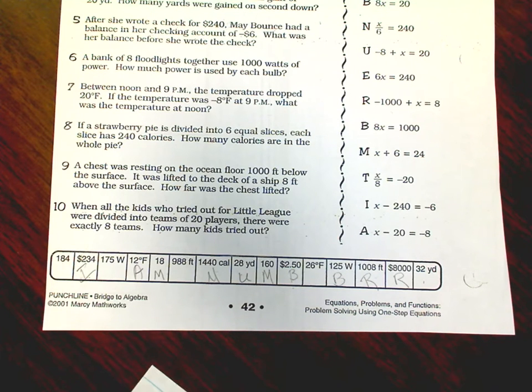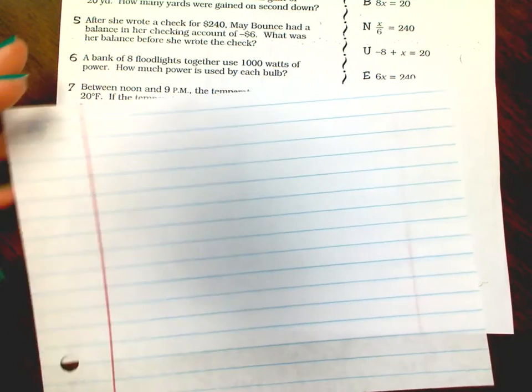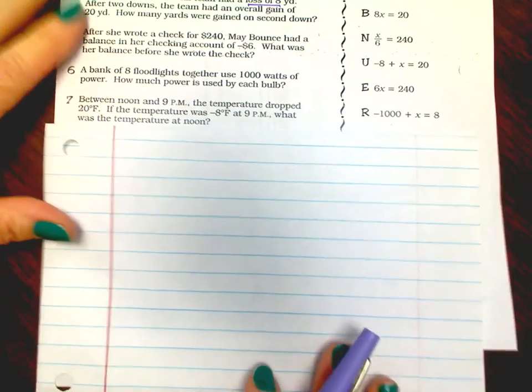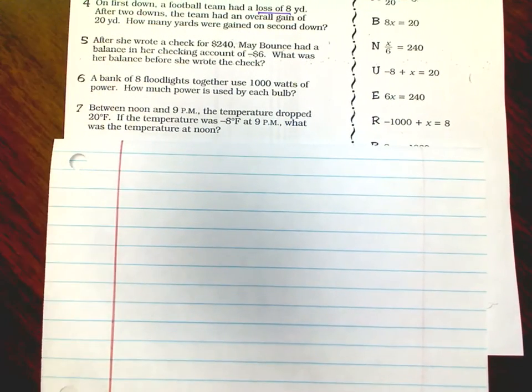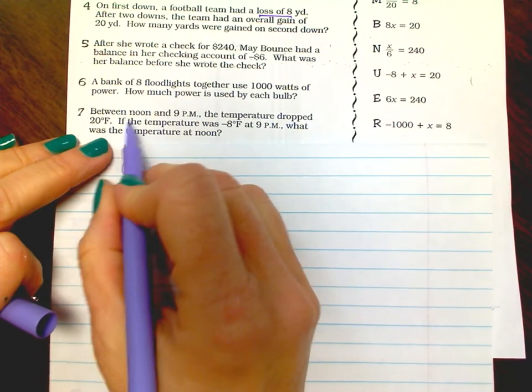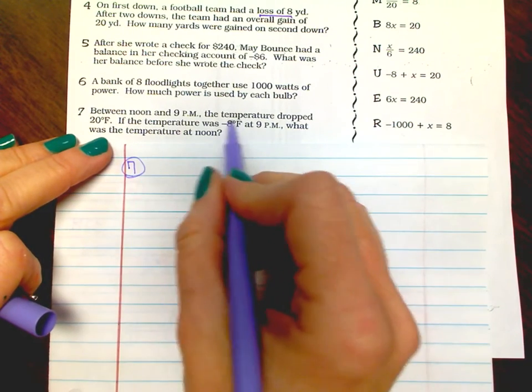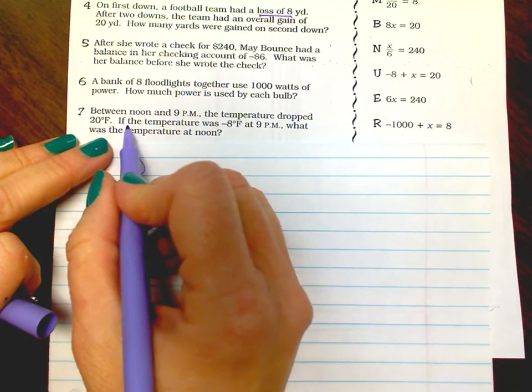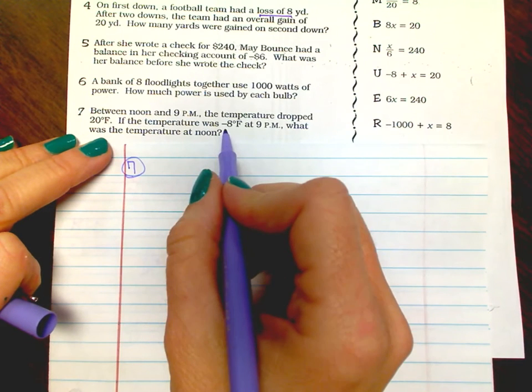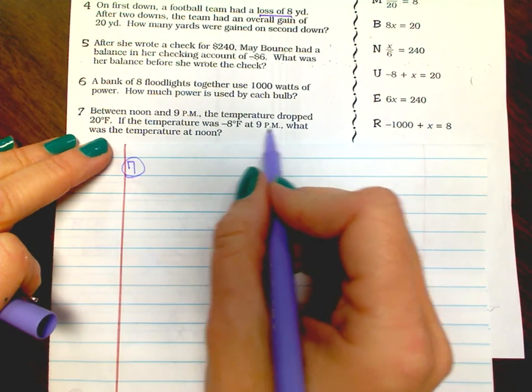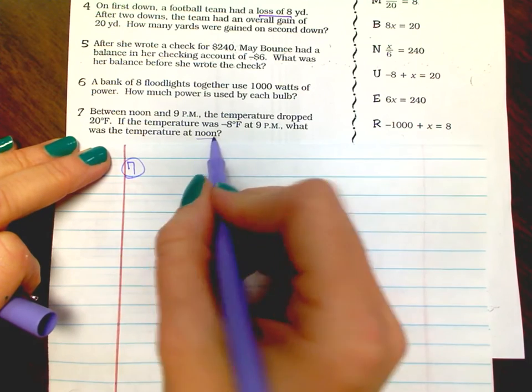Number seven. Between noon and 9 p.m. the temperature dropped 20 degrees. If the temperature was negative eight at 9 p.m., what was the temperature at noon?